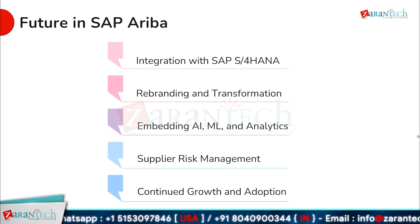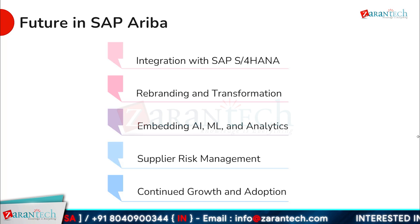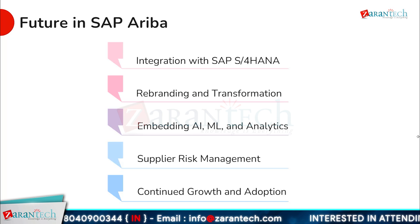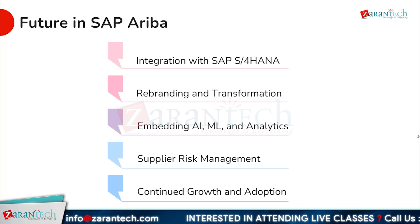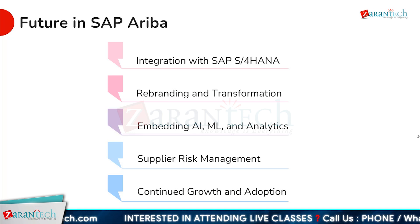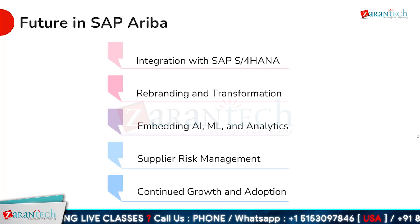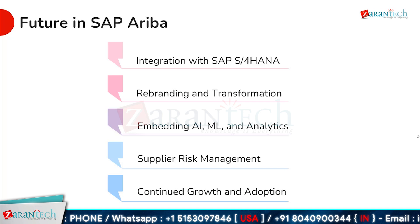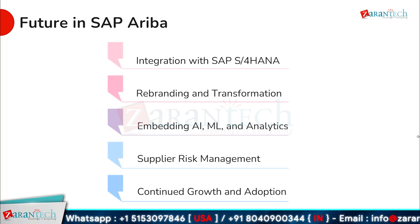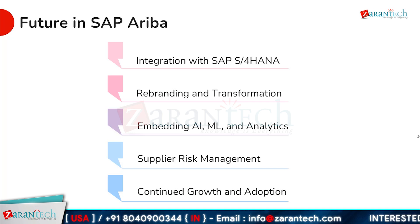The future of SAP Ariba is bright, with several exciting developments on the horizon. One key area of focus is integration with SAP S/4HANA, which will provide a seamless and unified procurement experience. SAP Ariba is also undergoing a rebranding and transformation, with a new focus on intelligent spend management. Artificial intelligence, machine learning, and advanced analytics are also being embedded into the platform, enabling businesses to make more informed and data-driven decisions. Supplier risk management is another area of focus, with SAP Ariba providing tools to help businesses monitor and mitigate supplier risk. And finally, SAP Ariba is expected to continue its growth and adoption, with more businesses recognizing the benefits of a unified and intelligent procurement platform.